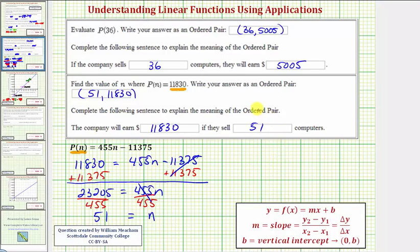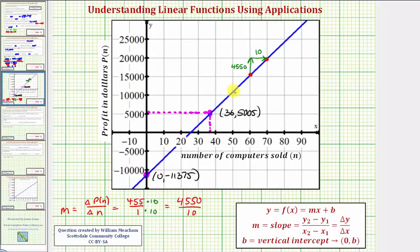So going back to our graph one more time, the ordered pair is this point here, which has coordinates 51 comma 11,830, and we discovered that if the function value is 11,830, then 51 computers were sold.